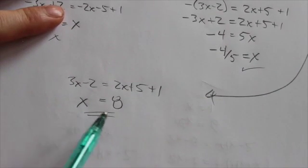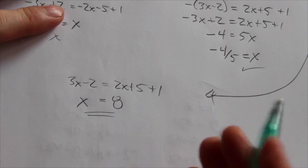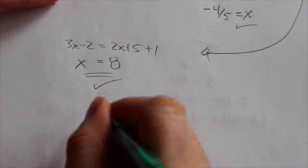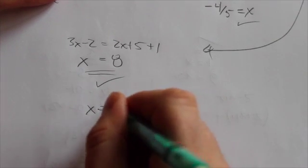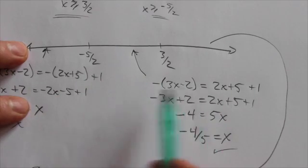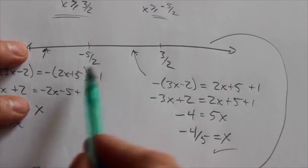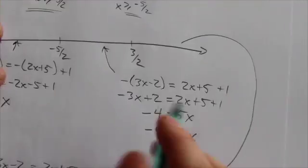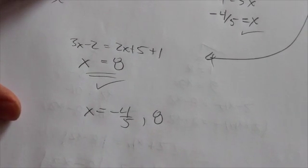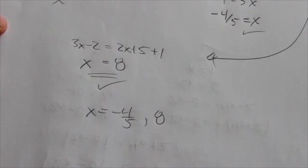Well, yes, that 8 is on the right hand side or it's greater than 3 halves. So that is an answer. So what I'm getting here is I'm getting two different answers here. Negative 4 fifths was in between here and I was solving the equation for in between those two. And so that worked. And then when I was solving the equation to the right of 3 halves, I got 8. And that also satisfies that restriction. So it's a big question.